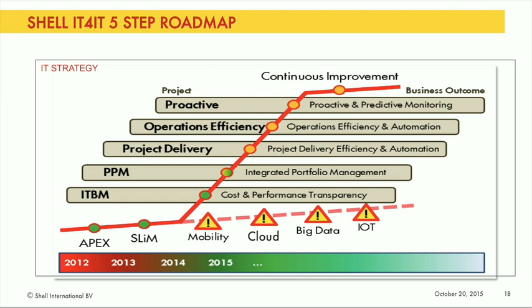APEX — Application Portfolio Excellence — was an early win: we built a trusted source of all of our applications and their major attributes. SLIM — Software Licence Management — we've built a compliance capability. Moving up the roadmap: IoT, Internet of Things; then ITBM, IT Business Management; above that PPM, Project Portfolio Management. And so we built this roadmap in Shell, in this particular order, though the order is really unimportant to us.